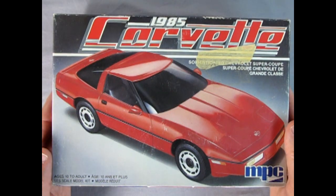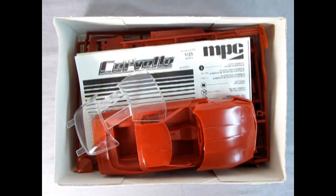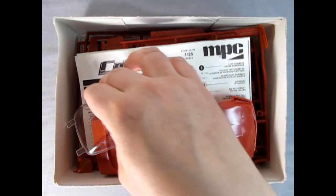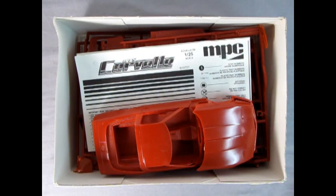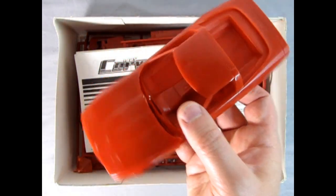And now taking the lid off our 85 Corvette, we're in for a nice little treat right here. Right away we see this famous red plastic. There's our glass. There's the body with interior and the hood all put on.